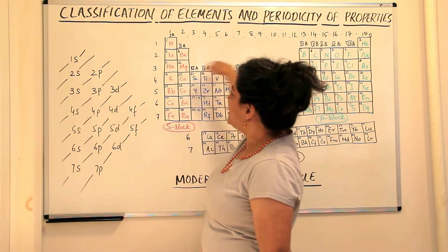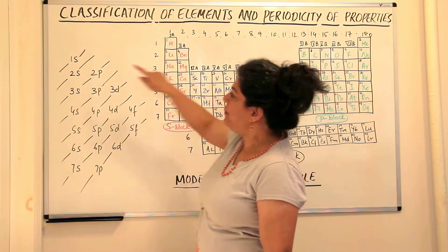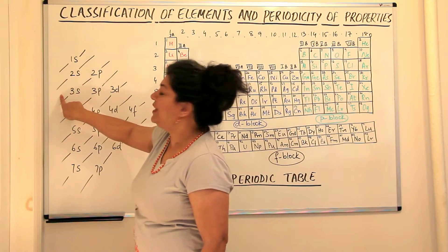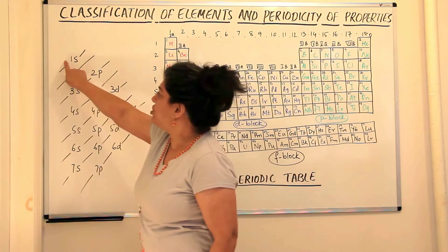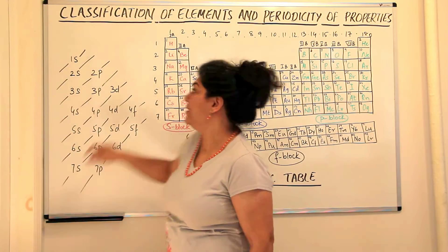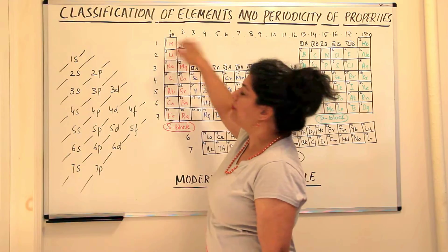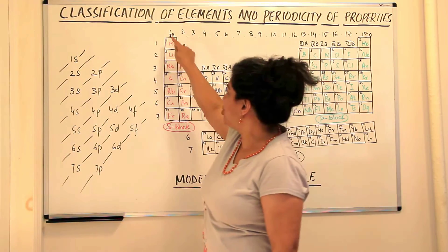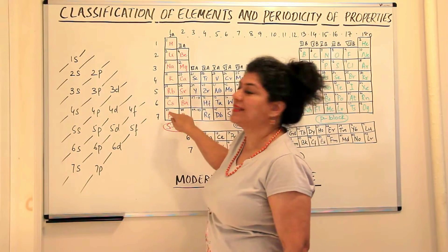So the first row or the first group consists of elements in which one electron goes in the s subshell. I told you that there are seven periods. These seven periods are actually the different principal quantum numbers. The first shell, the second shell, third shell, fourth shell, five, six and seven. So these seven are actually the principal quantum number.